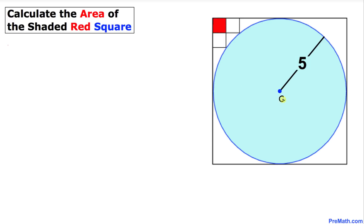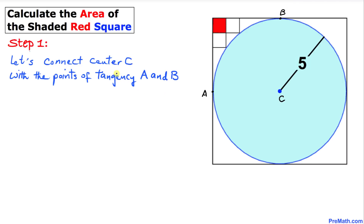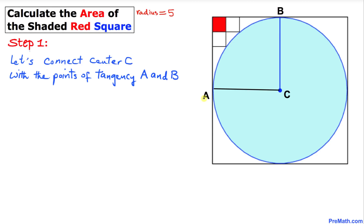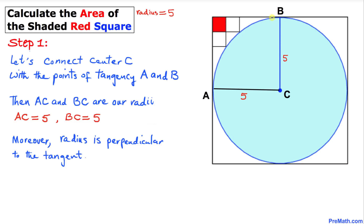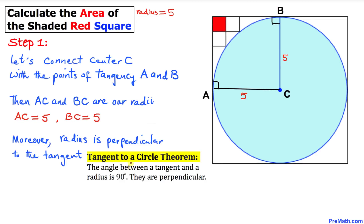I'm going to call the center C, and the points of tangency I'll call point A and point B. Now let's connect AC and BC. These AC and BC are our radii, and the radius is 5. Furthermore, the radius and the tangents are perpendicular to each other according to the tangent-to-a-circle theorem.